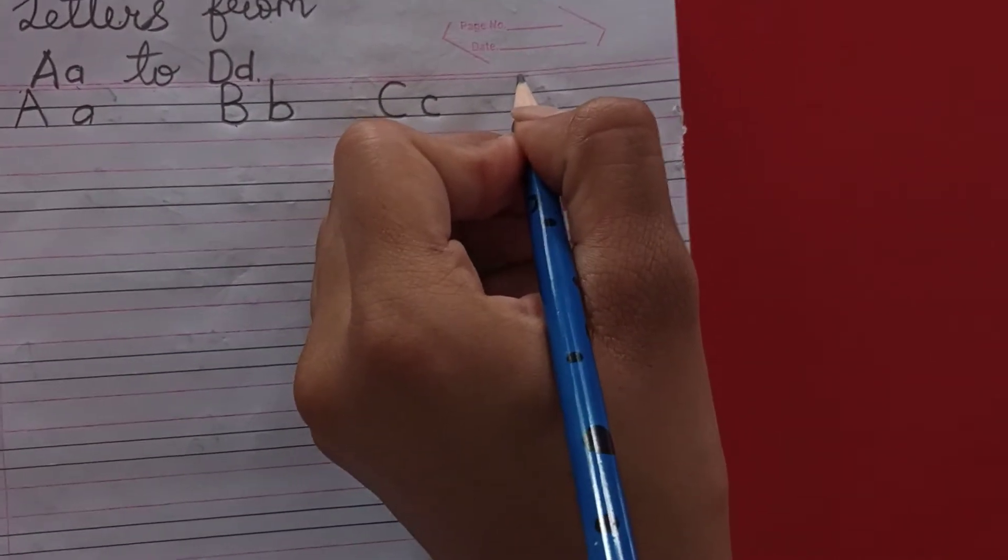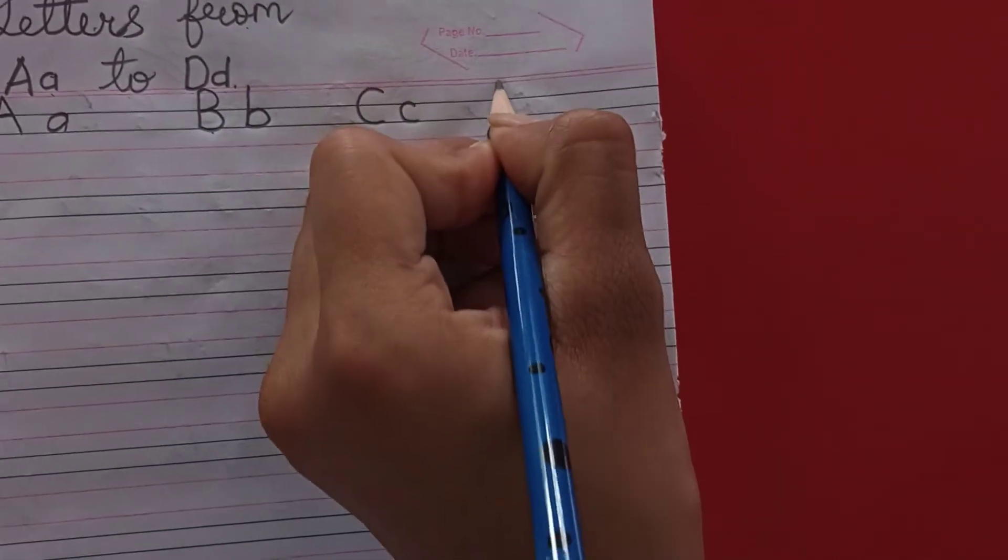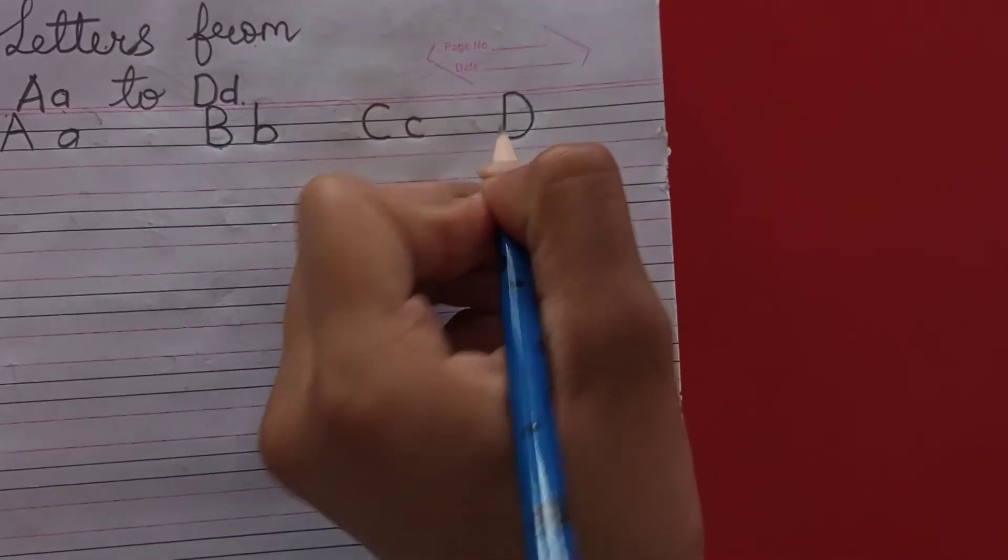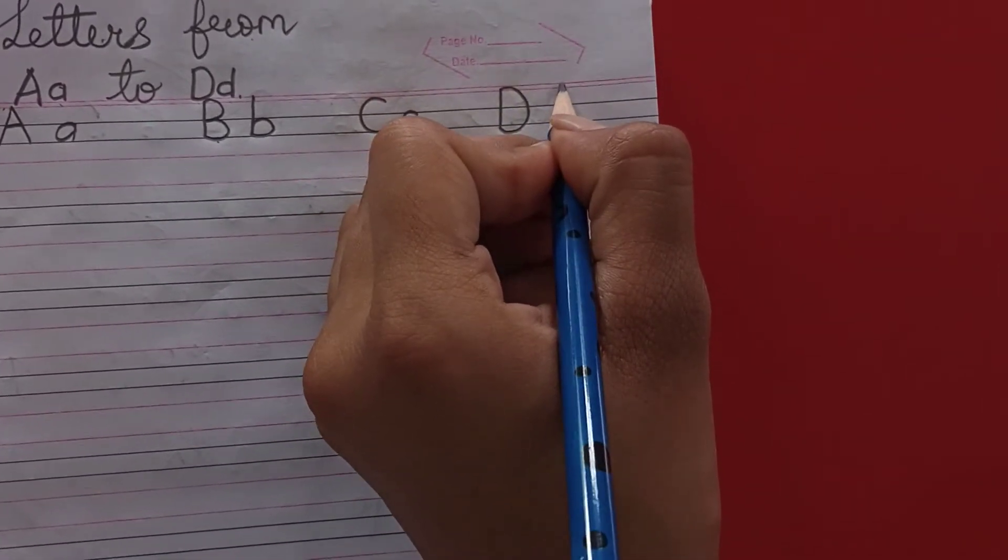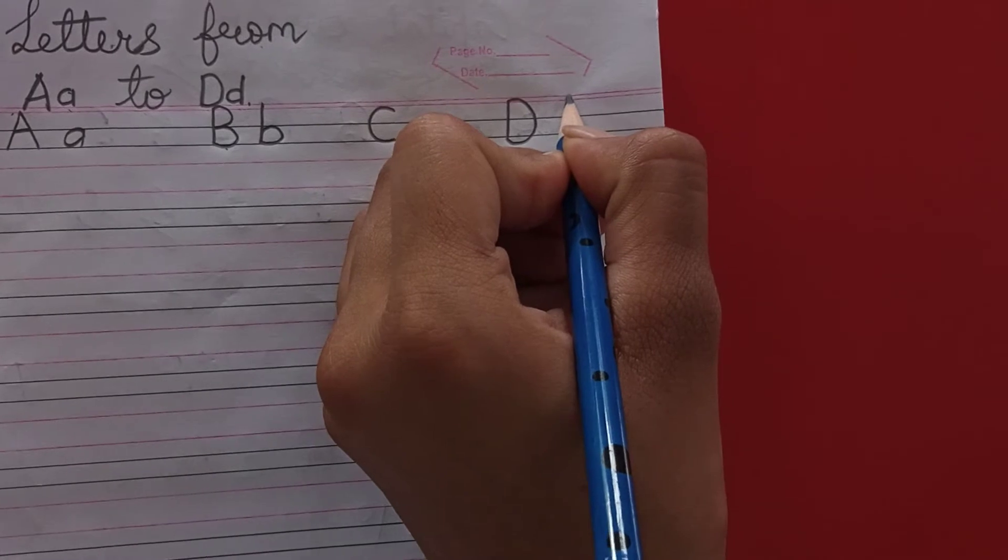We will write capital letter D. D for dog. Now, we will write small letter D.